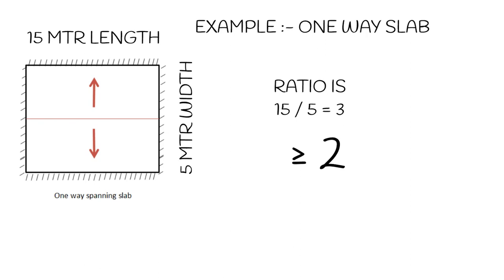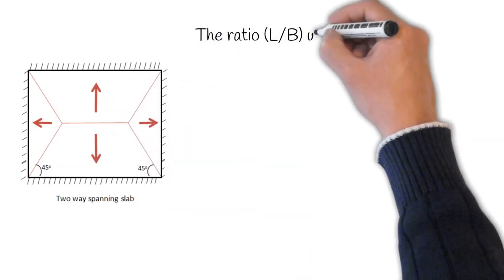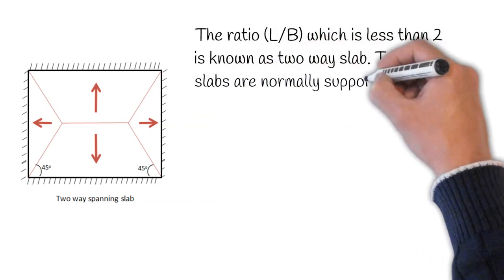Whereas in two-way slab, the ratio of longer span L to shorter span W is less than two. So two-way slab is: longer span L divided by shorter span W is less than two.